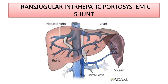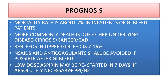TIPS — transjugular intrahepatic portosystemic shunt — is performed by placing a catheter in the jugular vein, advancing it to the hepatic vein, puncturing through to find the portal vein, and creating a shunt connecting the hepatic and portal veins. This shunts blood away from the portal system, reducing pressure in varices. Without this shunt, portal hypertension forces blood into unusual collateral pathways including the esophagus, causing varices.